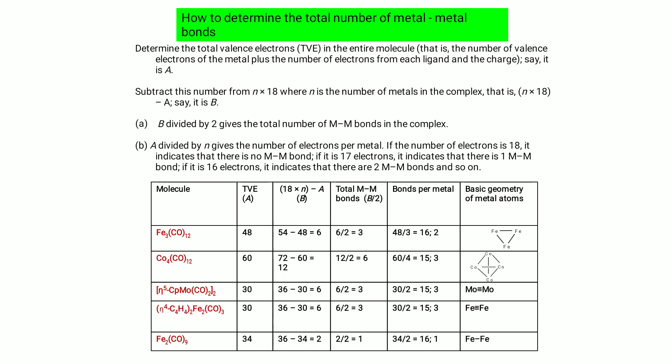Example: Fe₃(CO)₁₂. Total valence electrons A = 48. Multiply 18 × 3 (three metal atoms) = 54. Then 54 − 48 = 6 = B. Then 6 ÷ 2 = 3 total metal-metal bonds. Bonds per metal: 48 ÷ 3 = 16, indicating two bonds per metal, and the basic geometry is trigonal.